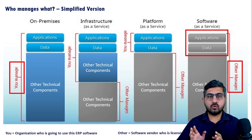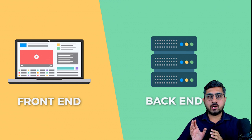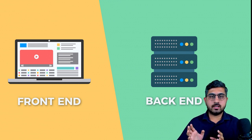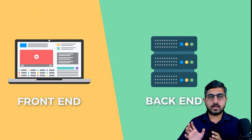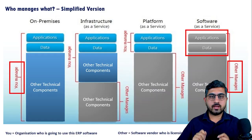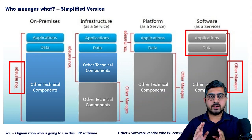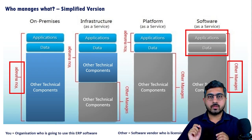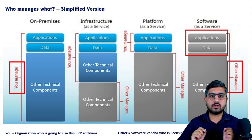In our previous video you already saw what is application or front-end, and what is data, which is part of the back-end or server side — the database tables, application logic, and file system together form the server side. Now, if the application, data, and all other technical components are managed by a software service provider, then we can say it is a SaaS-based or cloud-based application — essentially Software as a Service.